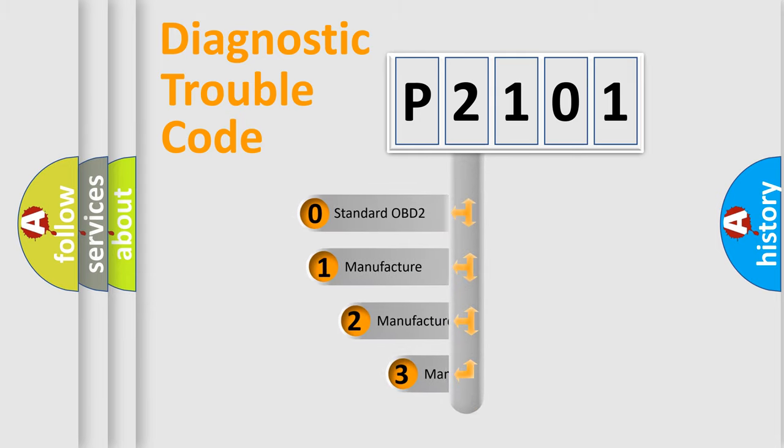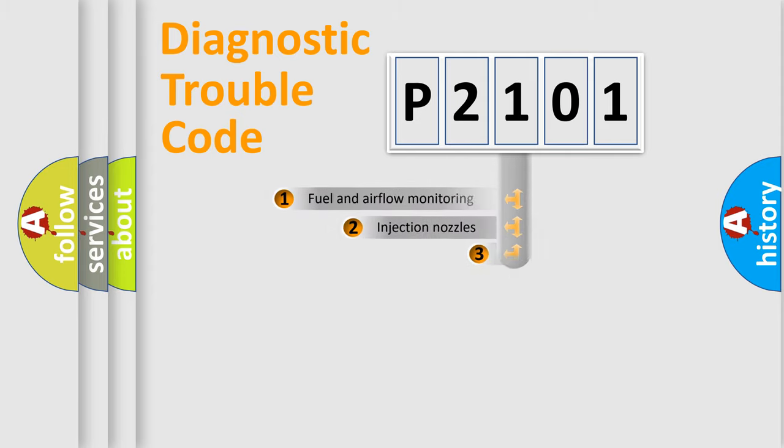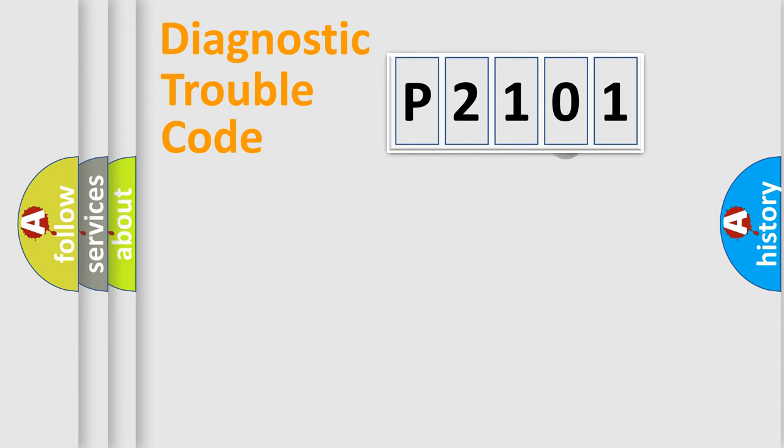If the second character is expressed as zero, it is a standardized error. In the case of numbers 1, 2, 3, it is a more specific expression of the car-specific error. The third character specifies a subset of errors. The distribution shown is valid only for the standardized DTC code.